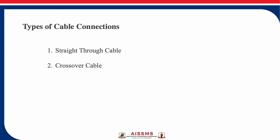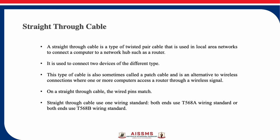There are two types of configuration for those ends, which is why we have two types of cable connections. A straight-through cable is a type of twisted pair cable used in local area networks to connect a computer to a network hub such as a router. This cable is used when connecting two devices of different types, and is sometimes called a patch cable. On this cable, the wired pins match.